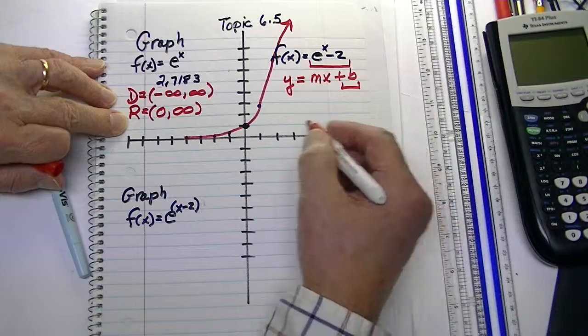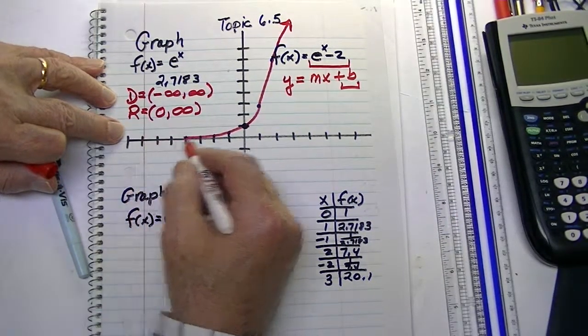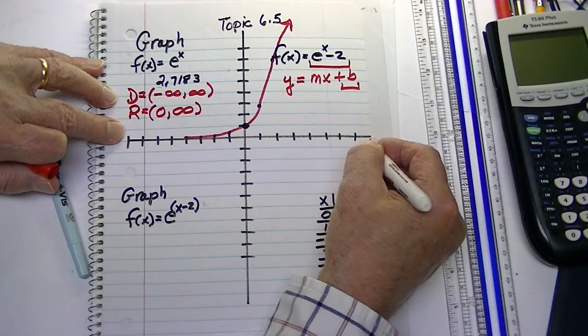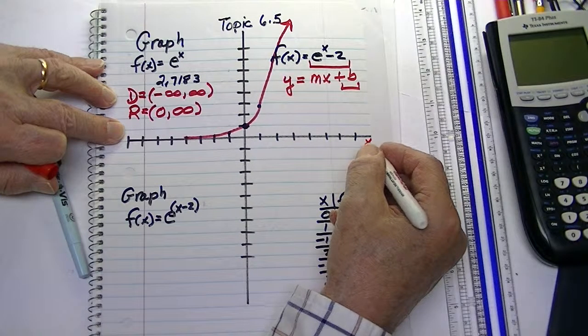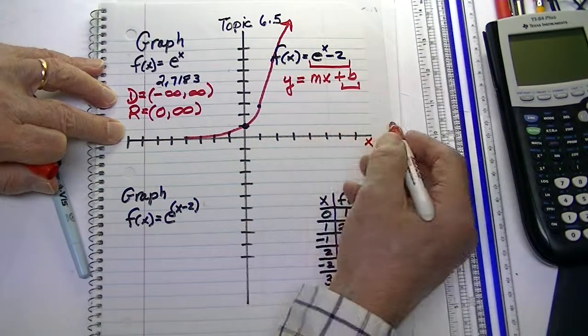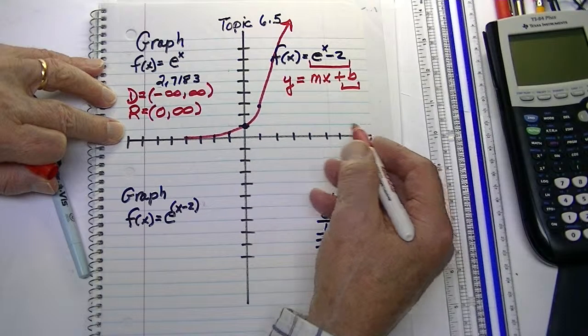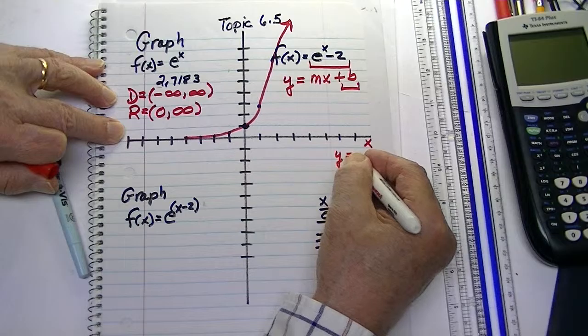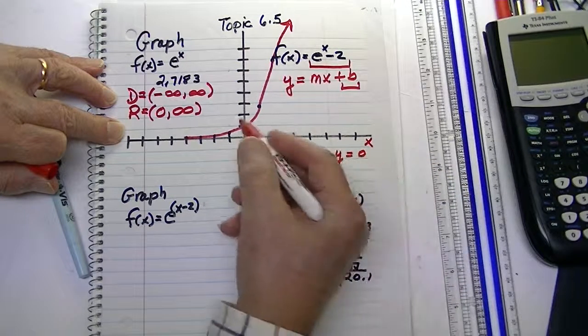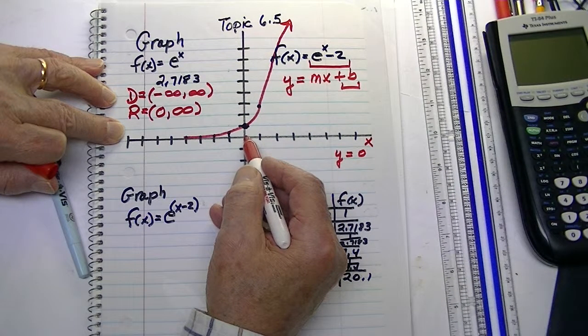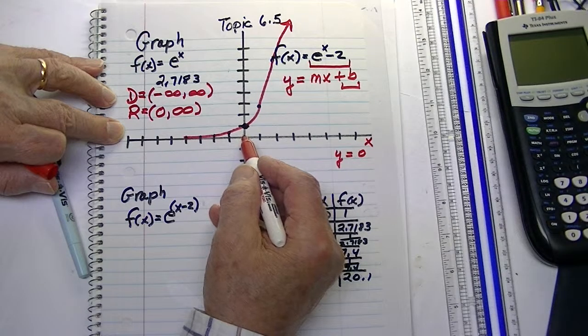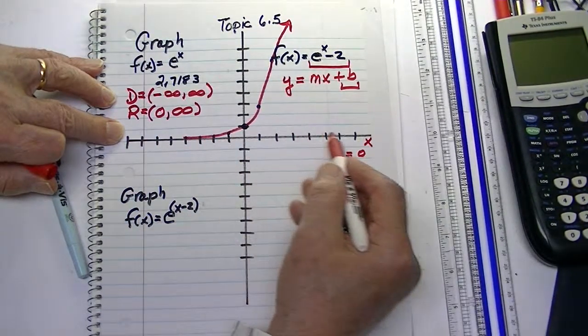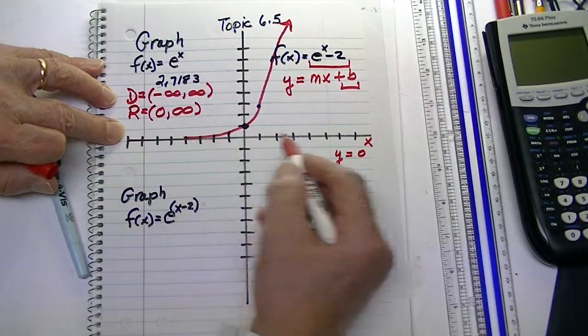which would be our negative 2, is our y-intercept. Now, remember, here, our x-axis is the x-asymptote. And the equation of the x-axis, if you may or may not be familiar with this, is y equals 0. Because your value of y, right here, at this point, is 0. So, this axis is actually y equals 0.